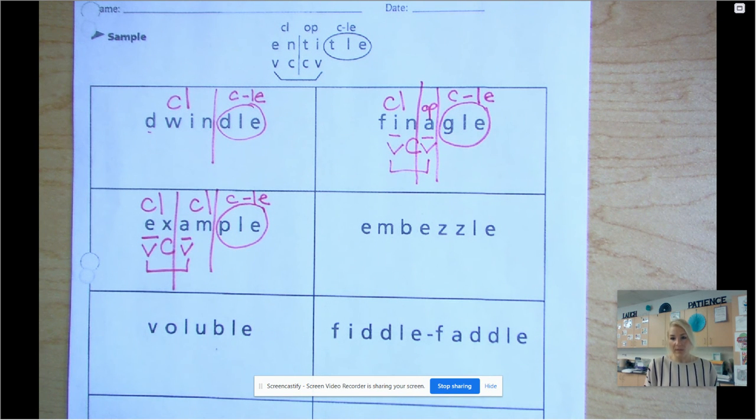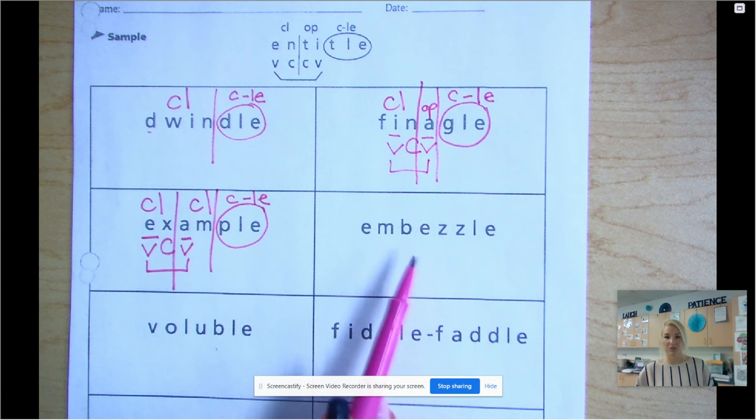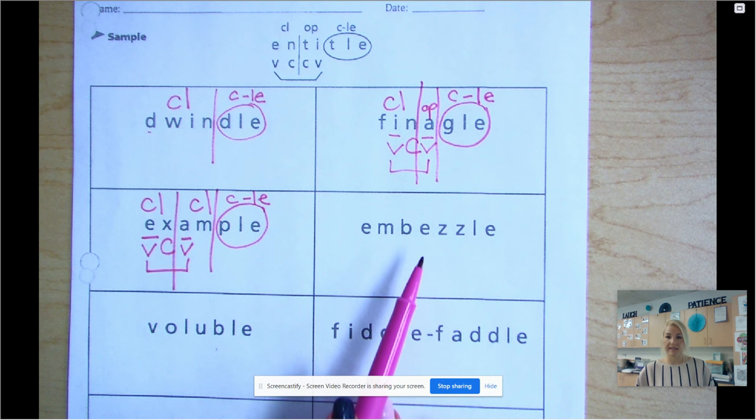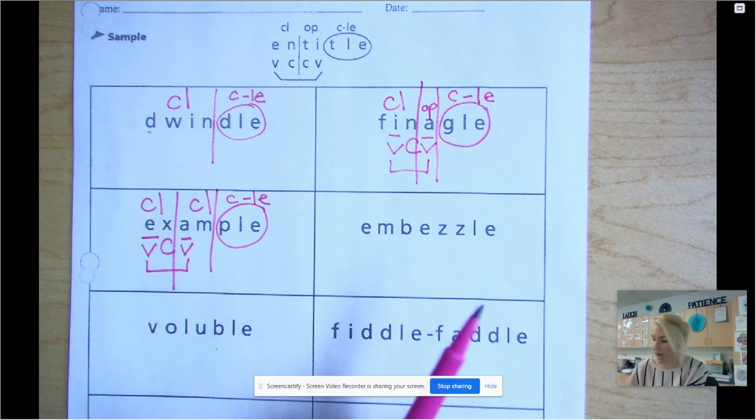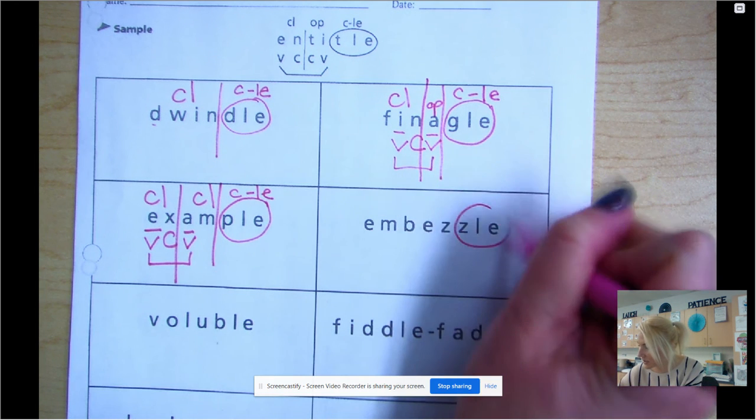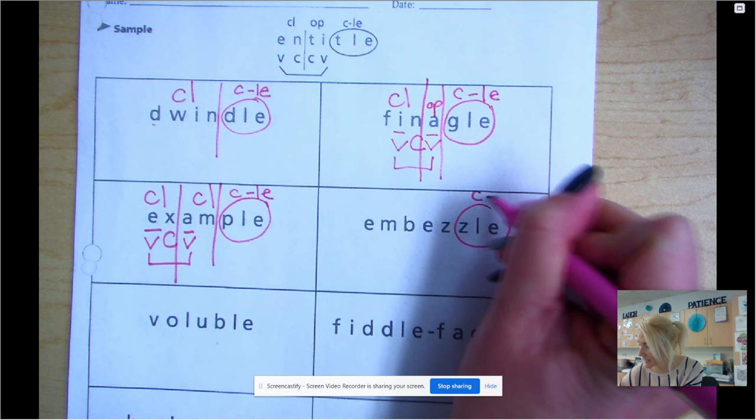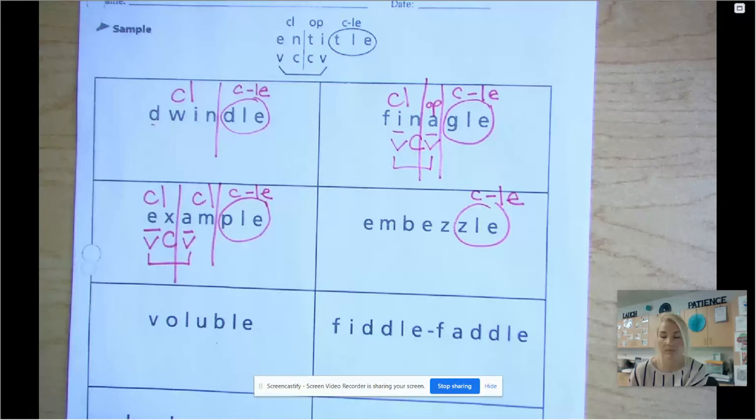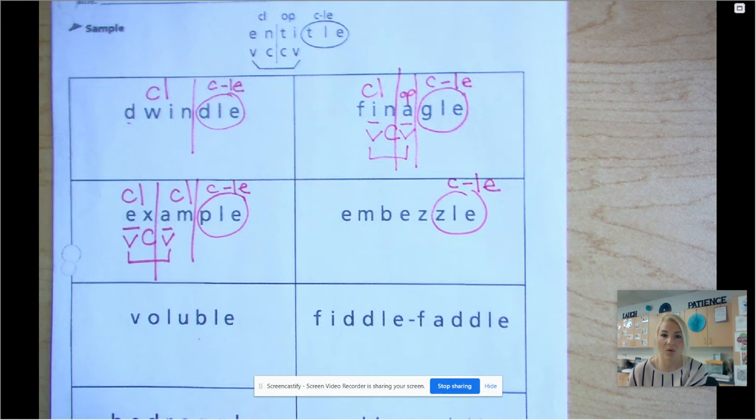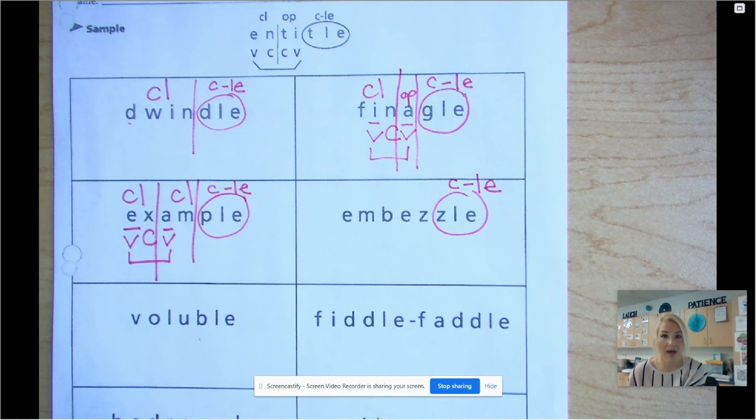Now, at home, I want you to think, what would be my first step that I need to do with this word? Well, I need to label the consonant L-E. If you said that, you're correct. So I'm going to go ahead and circle consonant L-E.